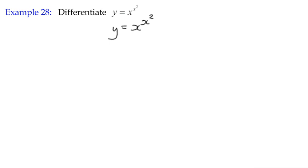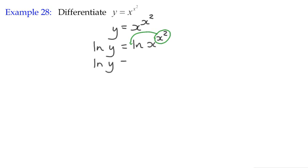Well, we can use logarithmic differentiation like we used in the previous example. We take the log of both sides. In doing so, we can use the particular log rule which says that if a log term has a power, we can rewrite it as a coefficient or multiplier. It's a very good rule to help make calculations so much easier.